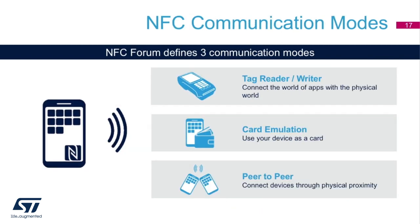The NFC Forum defines three basic communication modes. In the first mode, a reader or cell phone interrogates a tag to exchange information by reading or writing. The second mode is when a reader emulates a card — for example, using a cell phone for payment at an NFC-enabled terminal or as a hotel room key. The third mode is peer-to-peer, such as exchanging contact information between two phones.